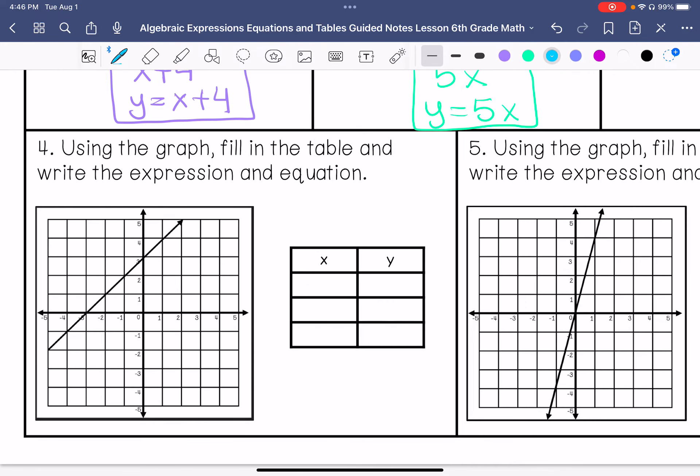Number 4, it says using the graph, fill in the table and write the expression and the equation. I'm going to start with at negative 1, we are at positive 2. At 0, we are at positive 3, and at 1, we are at positive 4. So what is happening here, it looks like we're adding 3. So that would be x plus 3, and y equals x plus 3.